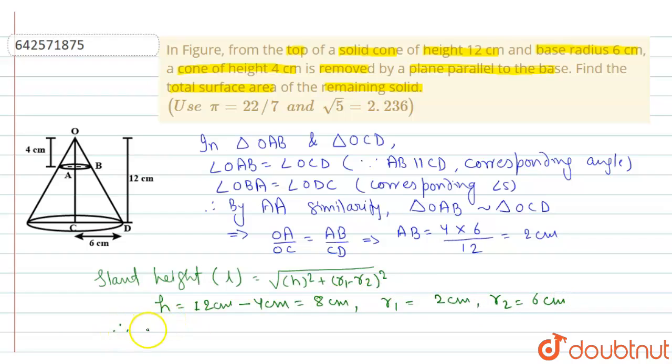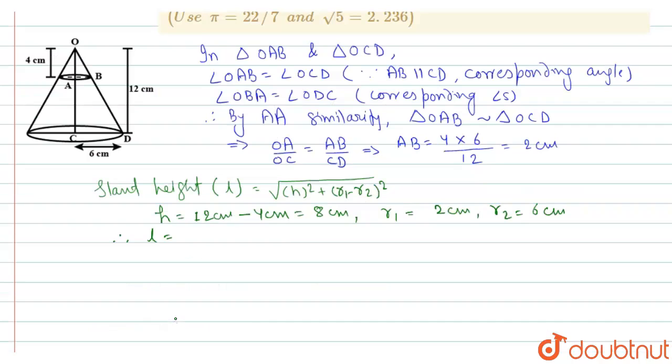So this gives, therefore, L is equal to under root 8 square plus (2 minus 6) square, which is equal to under root 64 plus 4 square will be 16. Now this is equal to under root 80, so this gives 4 under root 5.